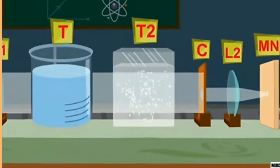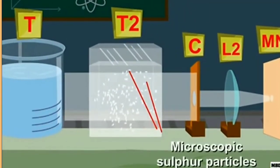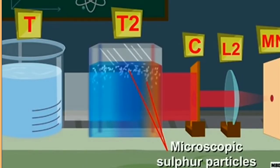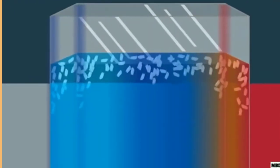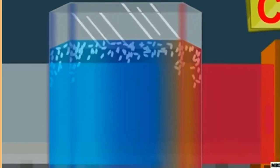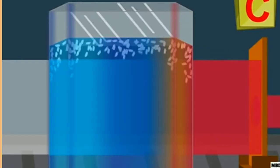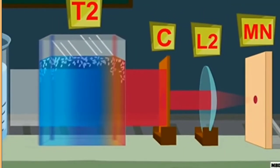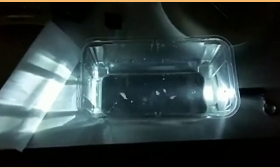After some time, you can see microscopic sulfur particles being produced in the beaker. These scatter light, and the color of the water turns blue while the color of the light reaching the screen turns crimson red. This is the demonstration of the experiment.